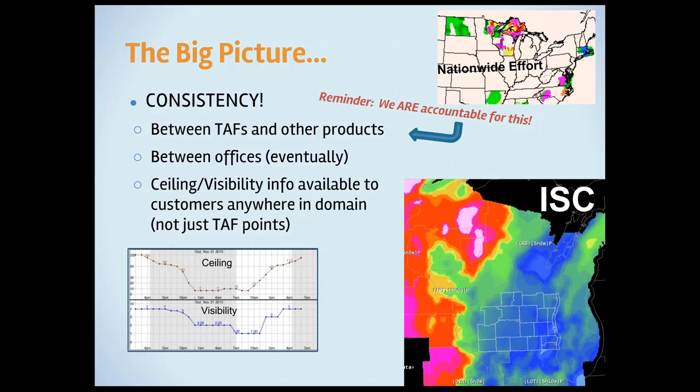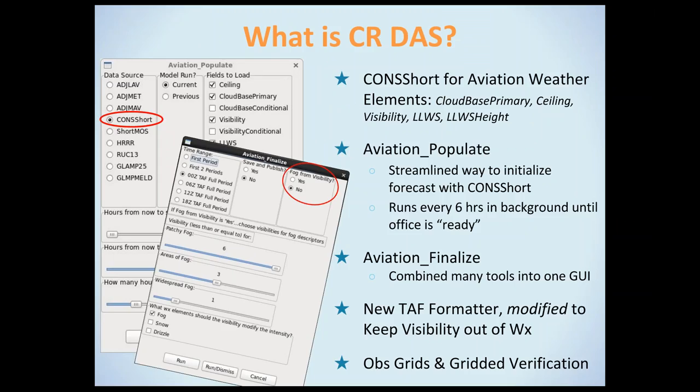For the central region, what was installed into your offices recently? You're going to have CONSHORT available for aviation weather elements. The new elements are called cloud-based primary, ceiling, visibility, low-level wind shear, and low-level wind shear height. We streamlined a lot of QC tools into a population procedure and a finalized procedure. We have a slightly modified TAF formatter, which keeps improving. Jerry made an observation grid, and after the OBS grid he was able to make gridded verification for these aviation weather elements.